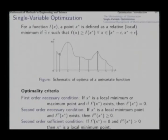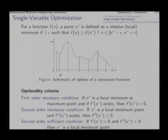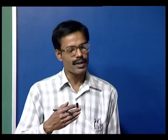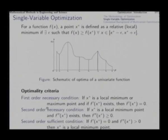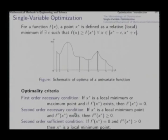At a minimum point, the first derivative is zero and the tangent is horizontal. Before that point the slope is negative, after that point the slope is positive, meaning the first derivative is an increasing function of x — so the second derivative is positive. This gives the second order necessary condition: the second derivative must be non-negative. The second order sufficient condition is that the second derivative is strictly positive.